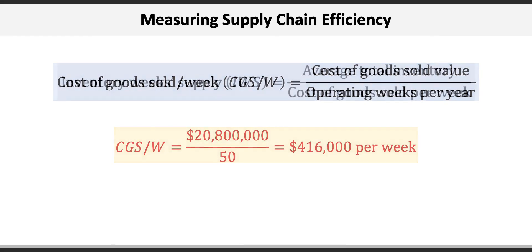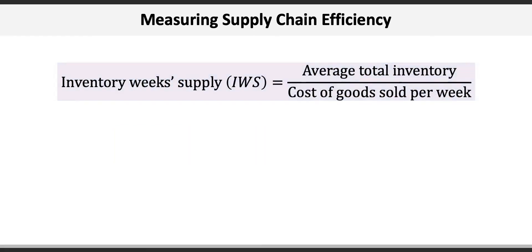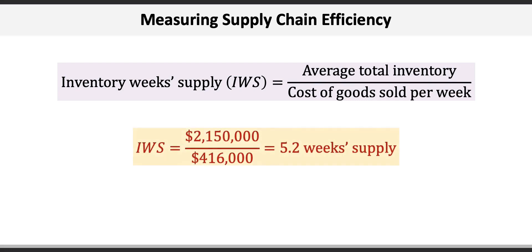In terms of inventory week supply, or IWS, the formula is average total inventory divided by cost of goods sold per week, which equals $2,150,000 average inventory divided by the $416,000 cost of goods sold per week we just calculated, to give us 5.2 weeks supply.